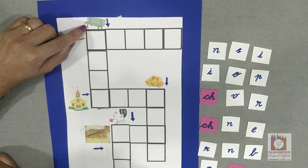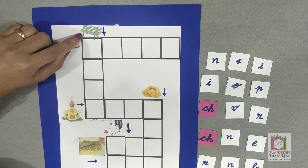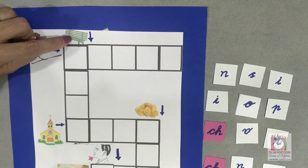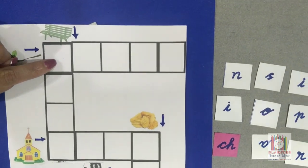Can you tell me what picture is this? Bench. Bench. And this arrow shows downward. We need to place the letters downward.